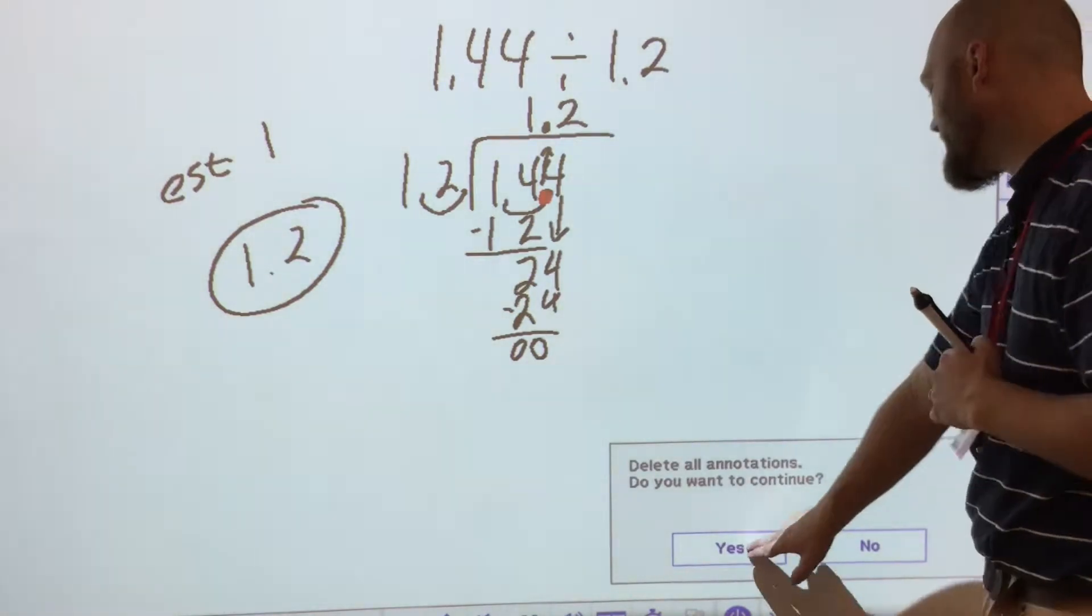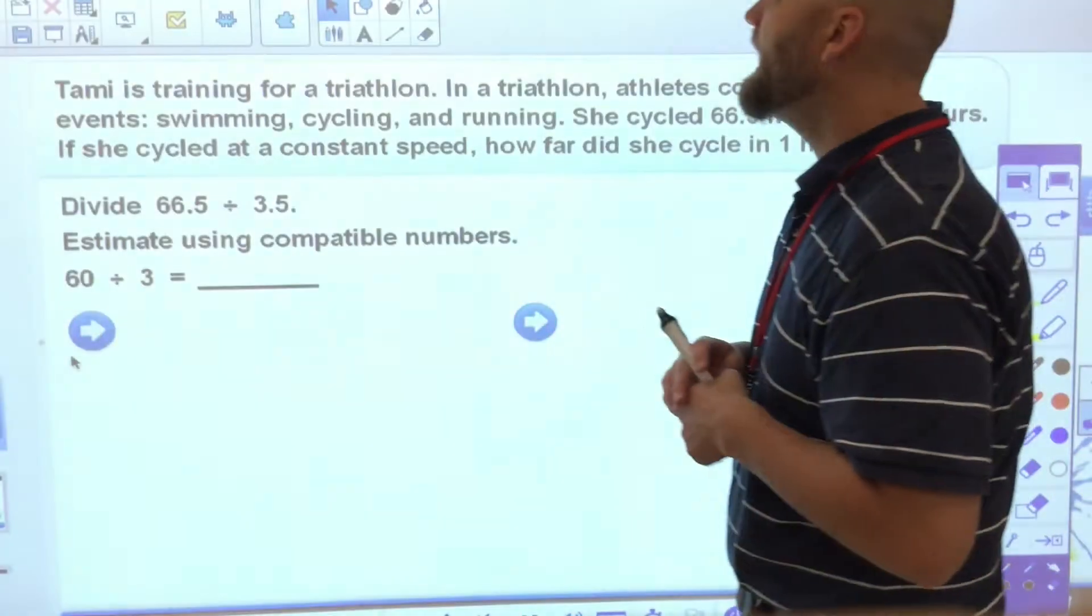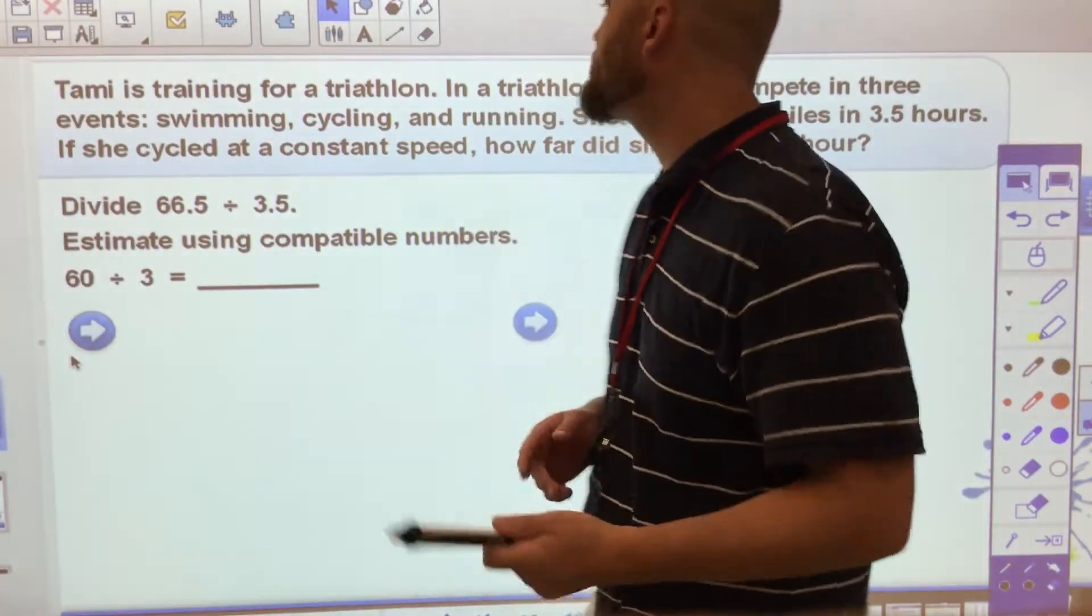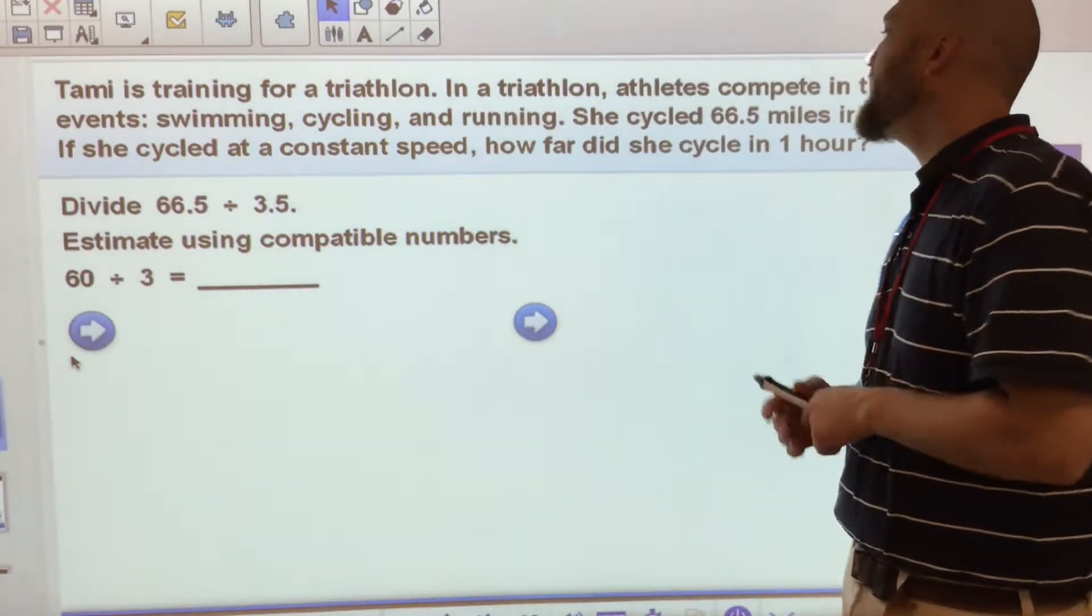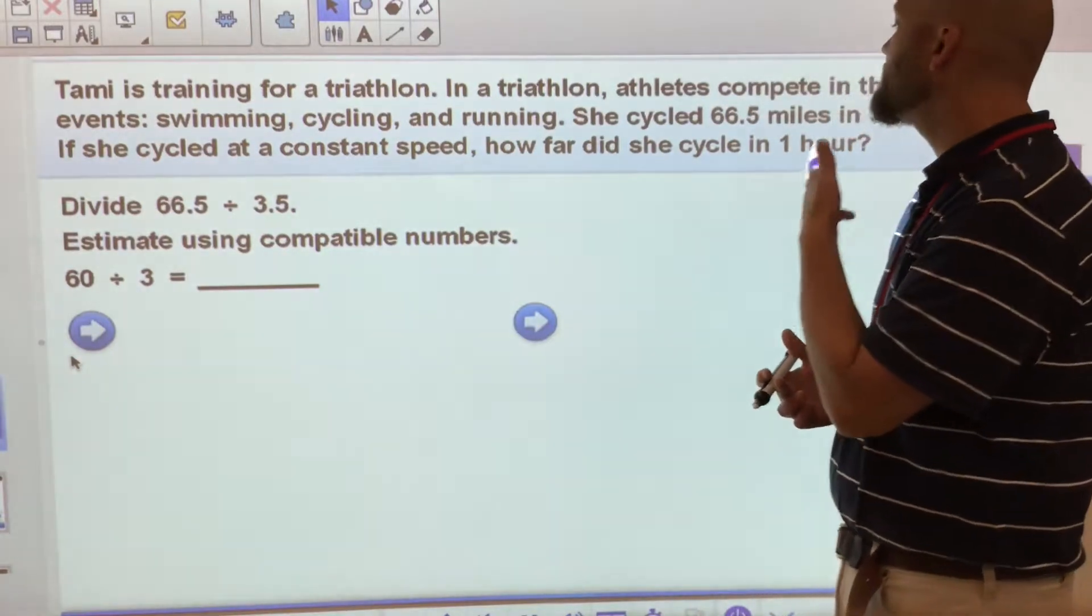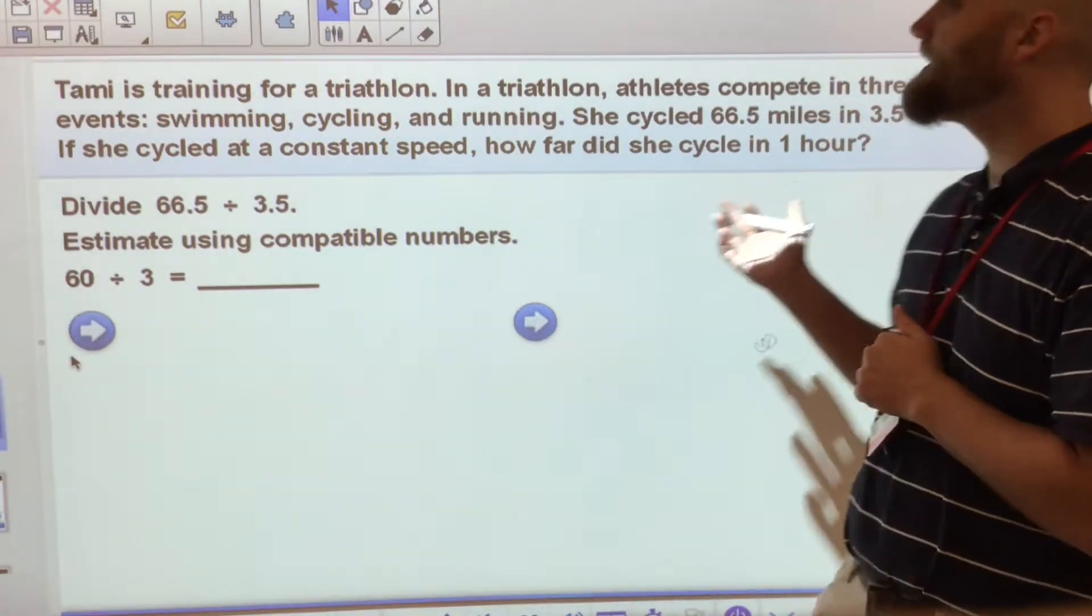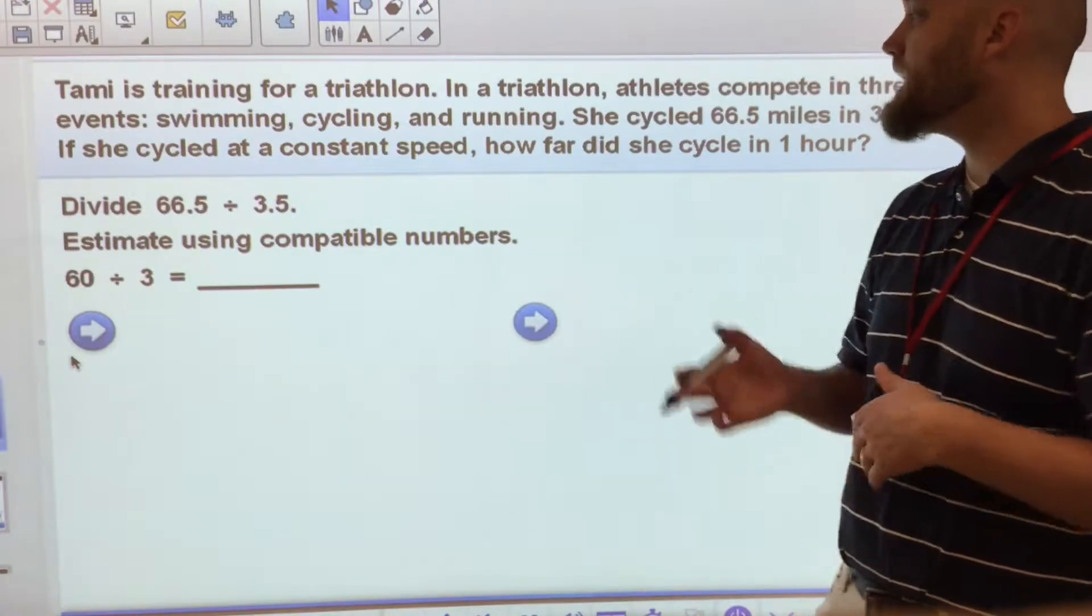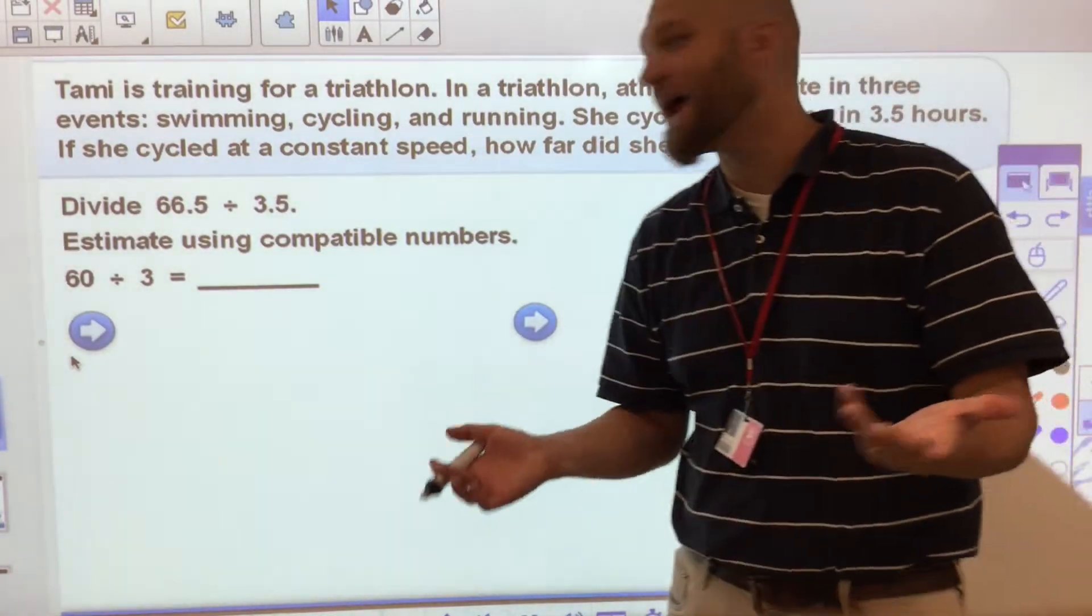Let's take a look at another problem. In this case, we're going to talk about Tammy. Tammy is training for a triathlon. In a triathlon, athletes compete in three events: swimming, cycling, and running. She cycled 66.5 miles in 3.5 hours. If she cycled at a constant speed, how far did she cycle in one hour?